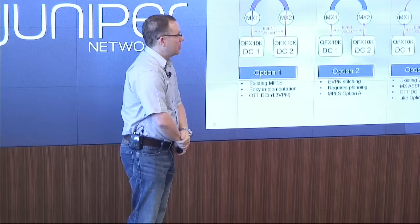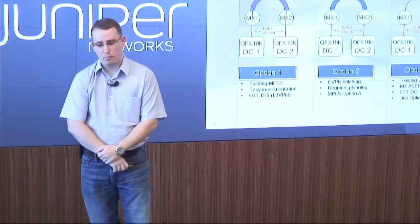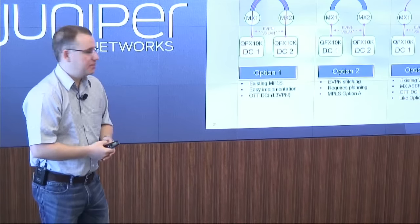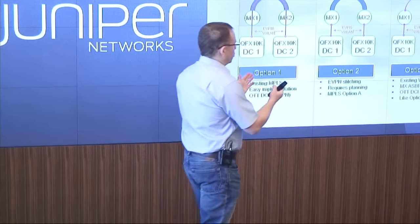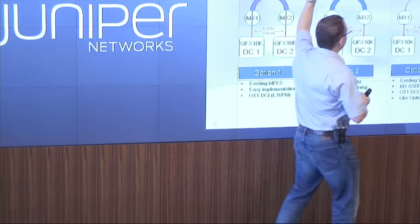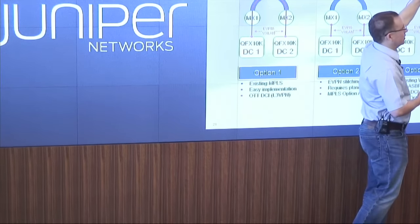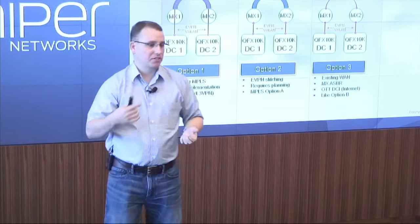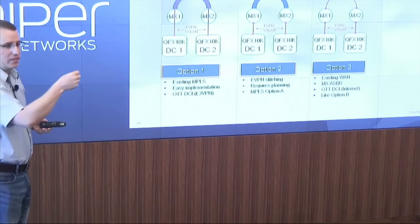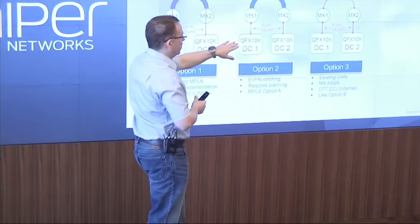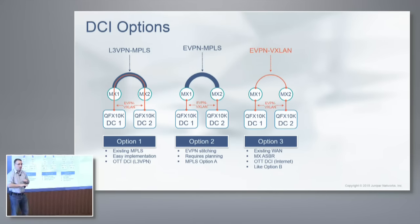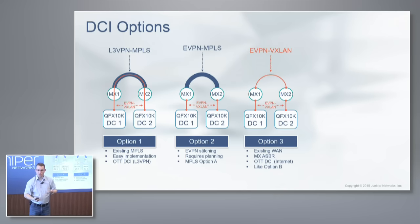The third option is a bit more interesting — more of a branch model where you might not have a traditional WAN. Maybe it's just going across the internet or an IP set tunnel. We get away from MPLS on the WAN side and go right to VXLAN, which can ride on top of IP. If you have two branch locations going across the internet, you can basically just tunnel this across. It's VXLAN through and through — from data center to edge router and edge router to edge router — with EVPN all the way through, giving you both L2 and L3 between locations.